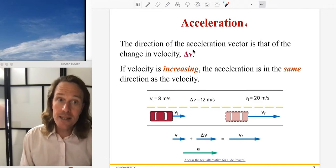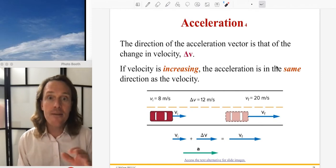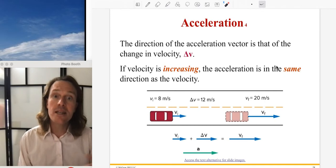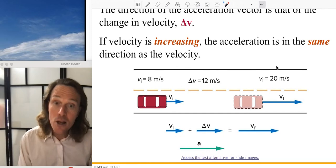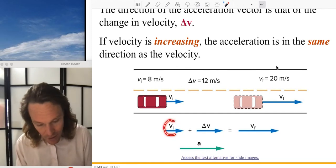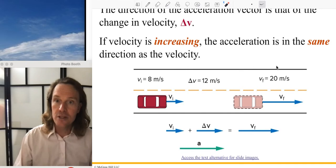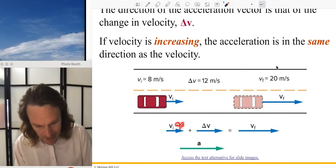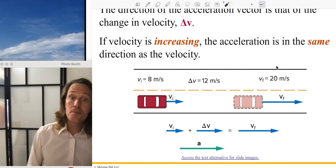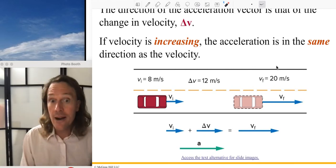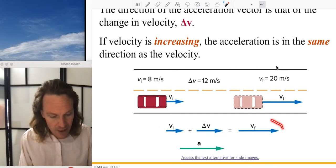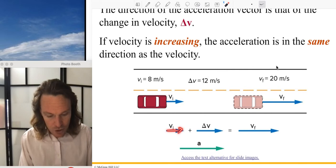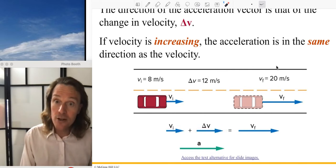In the 1D case, if velocity is increasing, the acceleration is in the same direction. Looking at the figure: the acceleration vector points in the same direction as the velocity vectors. Vectors are arrows with values and units — both velocity and acceleration in meters per second. The initial velocity plus the change in velocity (delta V) gives the final velocity — the final velocity is just the sum of those two arrows. The acceleration isn't directly given by these lengths because it depends on how much time passed.